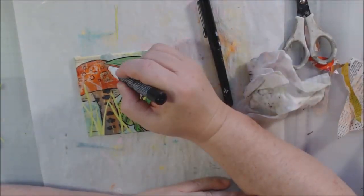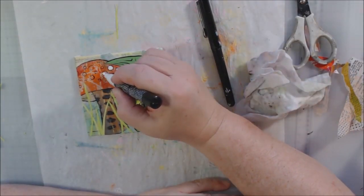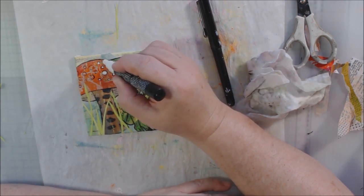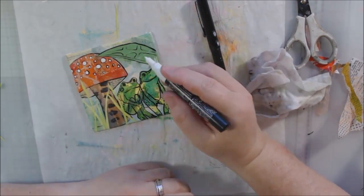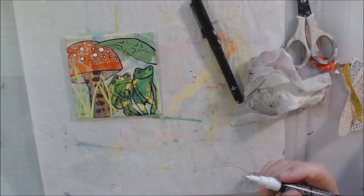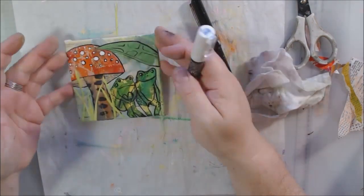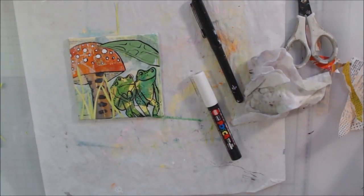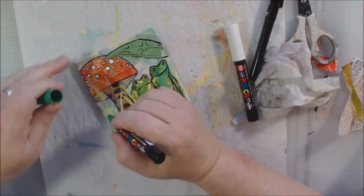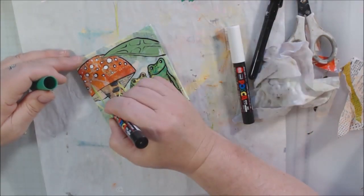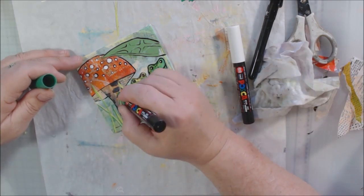Then I'm getting out my white Posca pen which is acrylic paint, a very opaque white pen, and filling in the dots on the mushrooms, adding some catch lights, maybe a few little highlights here and there with that. That's a fine tip Posca pen.